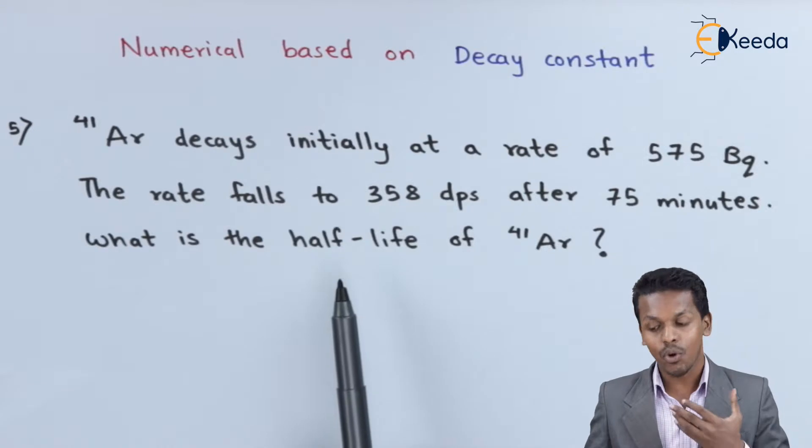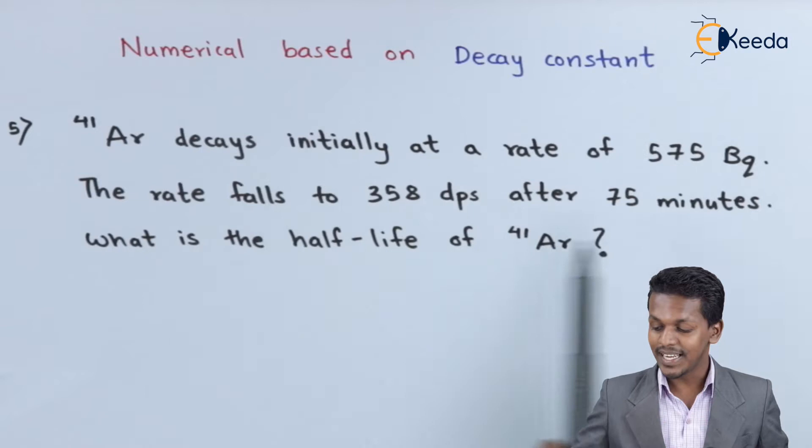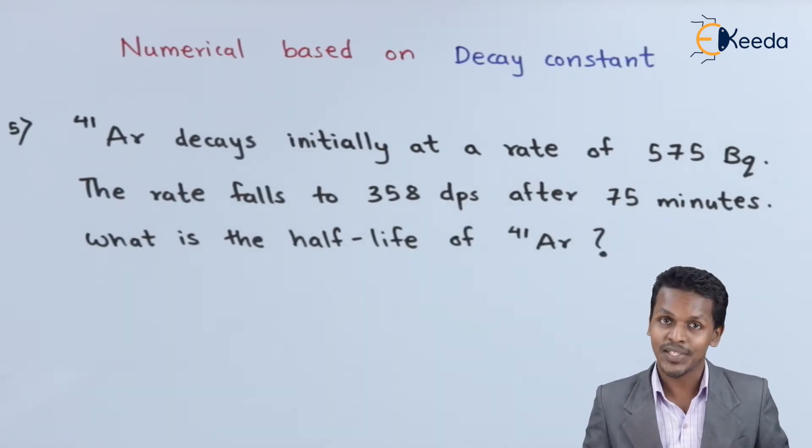What is the half-life of Argon-41? If we have to calculate the value of half-life, we should know the value of decay constant. Here we see there is no data related to decay constant. That means we have to find out the decay constant.